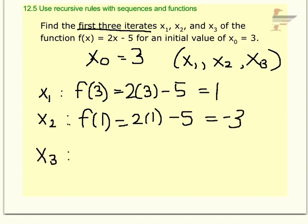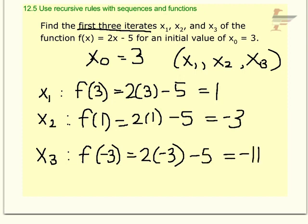And then x sub 3, I'm going to use my last output of negative 3 and put that in for x. So that's negative 6 minus 5, which is negative 11. So the first three iterates are 1, negative 3, and negative 11.